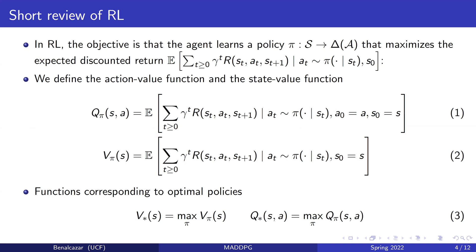In reinforcement learning, the objective is that the agents learn a policy — a mapping from the state space to a distribution over the action space — that maximizes the expected discounted reward. For that, we define an action-value function, which is the expected reward when we take a specific action under a specific initial state and then follow a specific policy, and a state-value function when we simply follow a policy from an initial state. The optimal policies correspond to those that maximize these two functions.